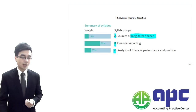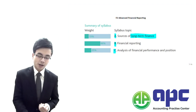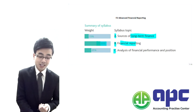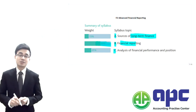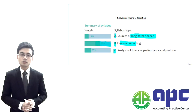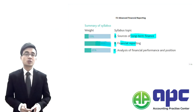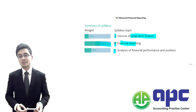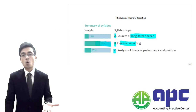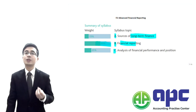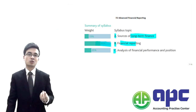Section B is where we're going to look at financial reporting. As you can see, it accounts for 60% of the syllabus. What financial reporting is mainly testing you on is some of the more complicated financial statements preparation.